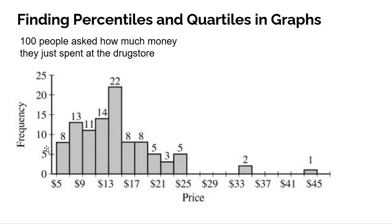We can also find percentiles and quartiles in graphs, but we have to be careful. The one drawback with histograms is we don't actually have the actual data values — we just see how many data values fell into each interval bin or class. For example, here a hundred people were asked how much money they spent leaving a drug store. We know somewhere between 9 and $11, 11 people spent in that range. The only negative is I don't know what those actual prices were, so I can't determine exactly what the quartiles are, but I can get a good indication of where they would fall.